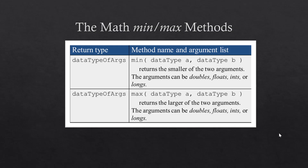The last two methods we will look at are the min and max methods. The min method takes two numbers — they can be doubles, floats, integers, or longs — and returns the smaller of the two. The return type is the same data type as the arguments. The max method similarly takes two numbers and returns the larger of the two.